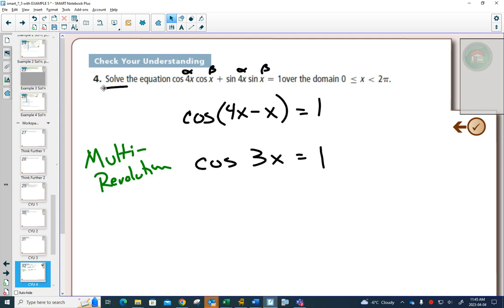Now, the steps that we did for a multi-revolution question. Step one is we rewrote the domain for 3x. So, for example, the domain right now is x is between 0 and 2 pi.